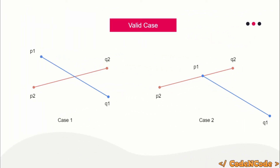Let's go case by case. The first case is the most easiest one when they actually form a cross, and the second case is where three points are actually collinear. To take care of these two cases, take one line and find out the orientation of the endpoints of the other line. Take this line and find out the orientation of P1 and Q1 — P1 is counterclockwise, P2 is clockwise with respect to this line. We already saw how to find the orientation of three points in the previous lecture. Here you would find that P2, Q2, and P1 is counterclockwise, and P2, Q2, and Q1 is clockwise.